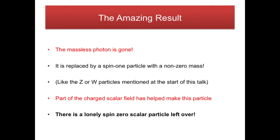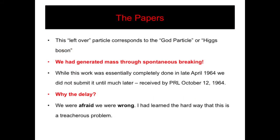Part of the charged scalar field that was in this theory helped make this massive particle, and when it did so there was a leftover separated particle — a spin-zero scalar particle with no charge. Everything got real mass. And that particle is now what's called the God particle or the Higgs boson. What we had done is generate mass through the idea of spontaneous symmetry breaking — something quite new.